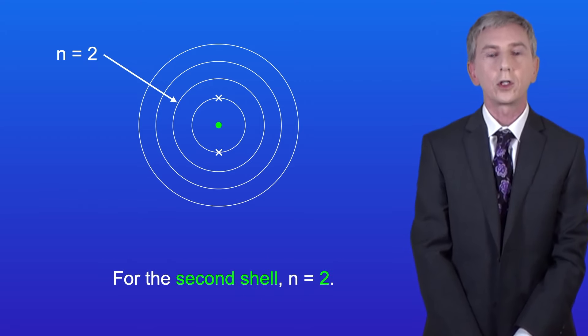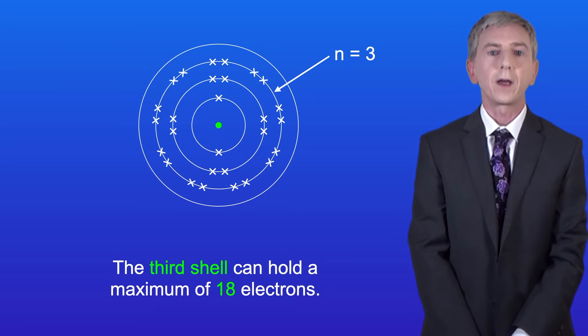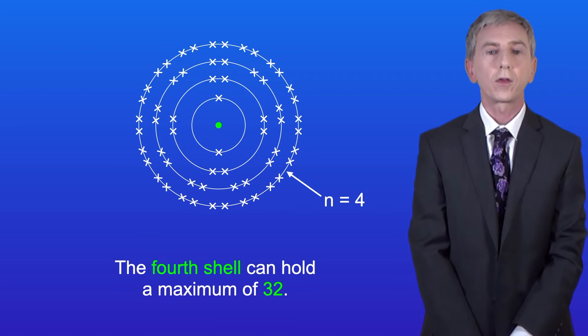For the second shell, n equals two, so this means we've got a maximum of eight electrons in the second shell. The third shell can hold a maximum of 18 electrons, and the fourth shell can hold a maximum of 32.